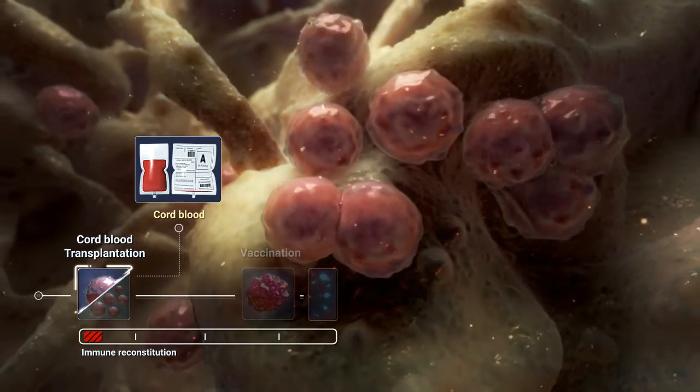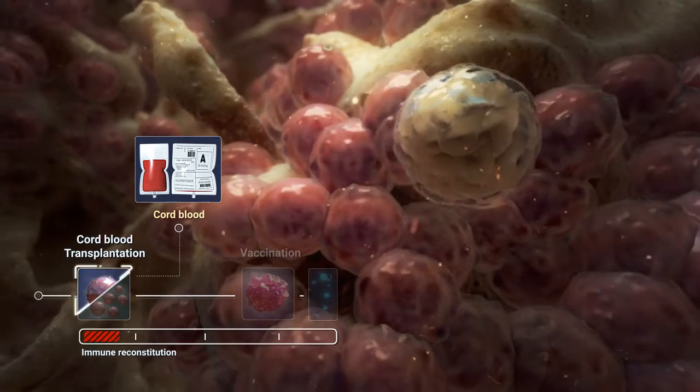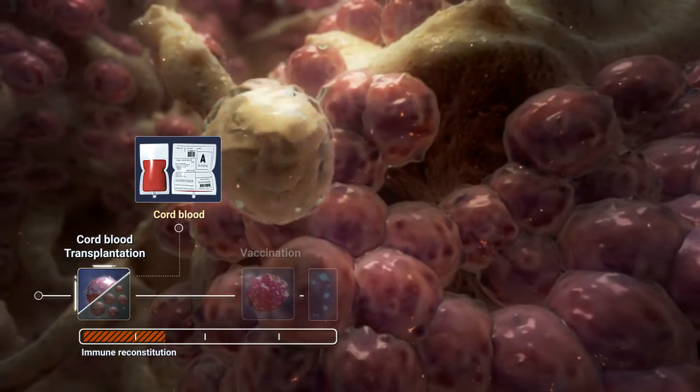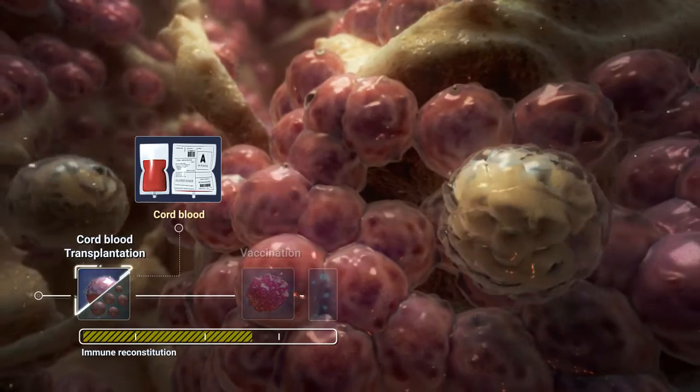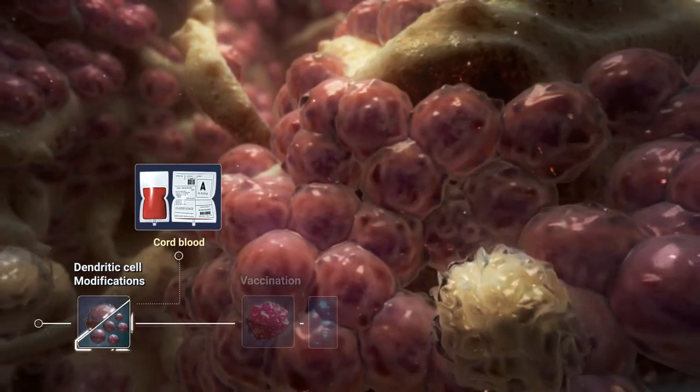The stem cells present in the cord blood engraft the empty bone marrow and develop into a new potent donor immune system that produces naive T cells.